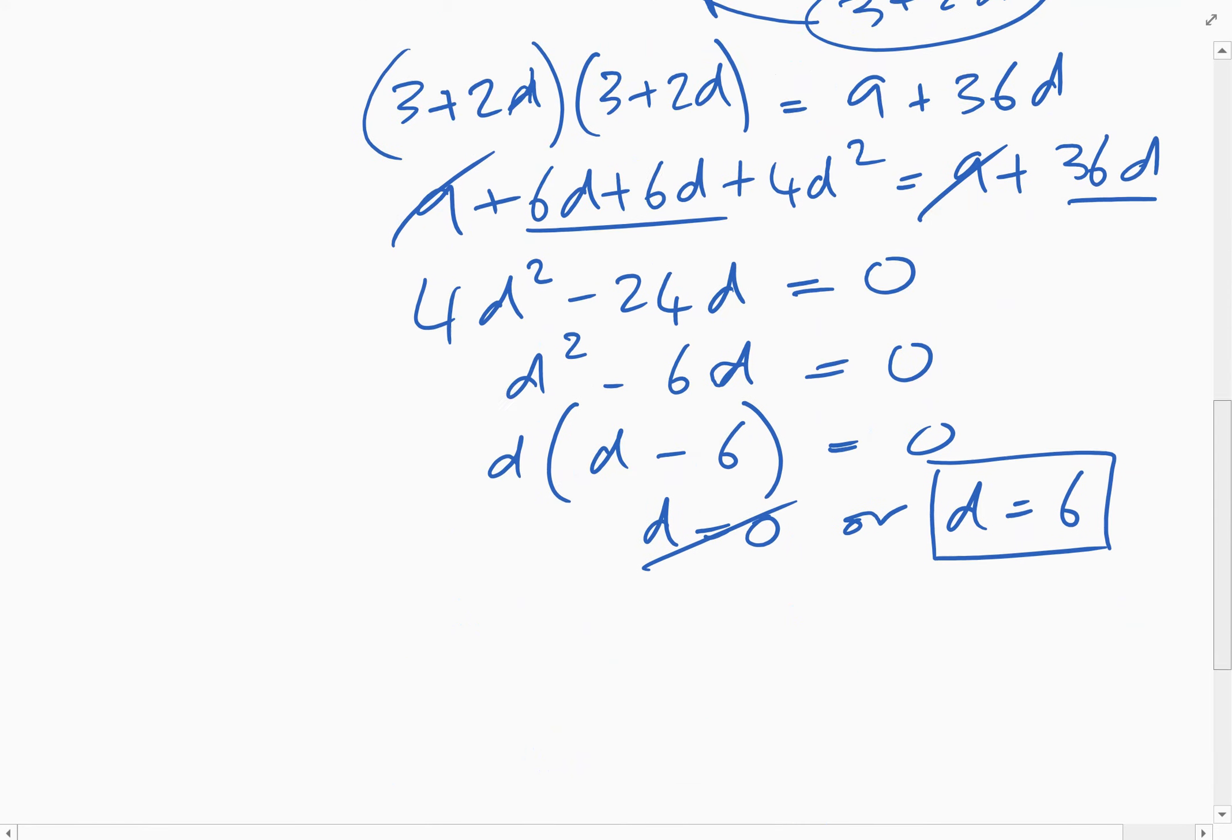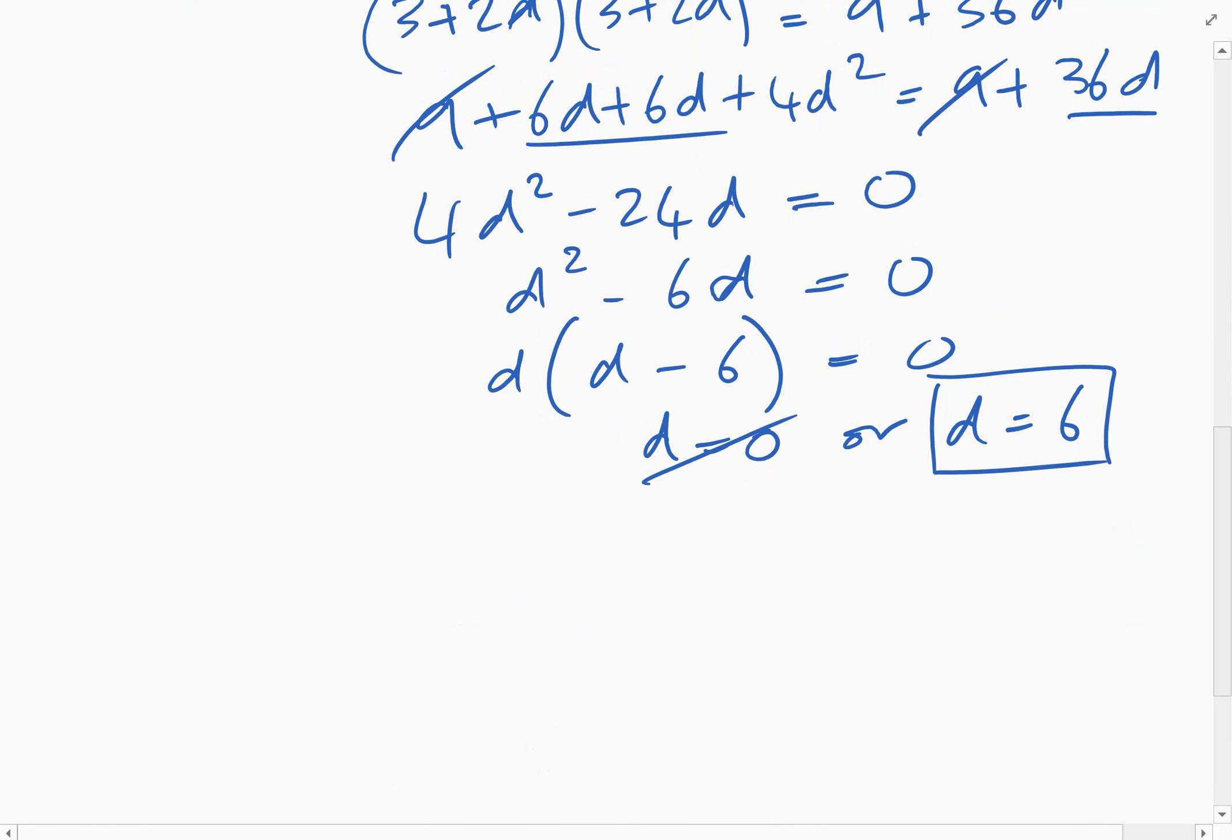So substitute in d equals six. So r will be 3 plus 12 times 6 over 3 plus 2 times 6, and that's 75 over 15, which equals five.